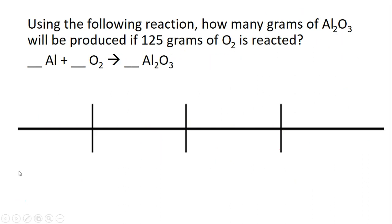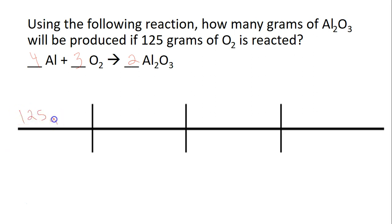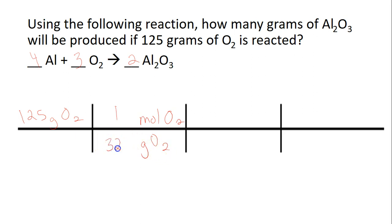Before you watch this example, I want you to pause the video and try it for yourself. Before we can do anything, we're going to make sure this is balanced. When we do that, we're going to have 3 oxygens, 2 Al2O3s, and 4 Als. I'm going to start with my given: 125 grams of O2. We're going to bring grams of O2 to the bottom.